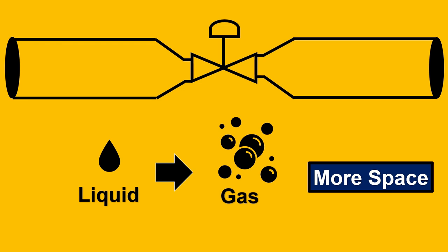Now if we increase the downstream pressure even more or reduce it again more liquid will turn into gas and again it will require more space. So, it will not allow the flow to increase.